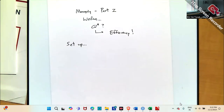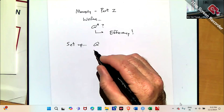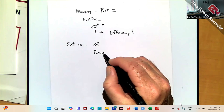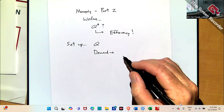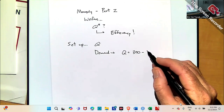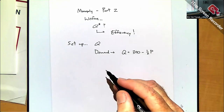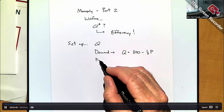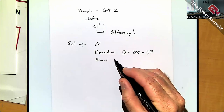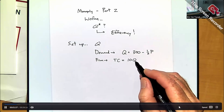For my setup here, I have a firm producing good Q, and there's a demand curve given for the product. Like last time, let's say we have a linear demand: Q equals 300 minus one-half times P. And then the firm producing the product has a total cost function — I'll say total cost equals 10 times Q.